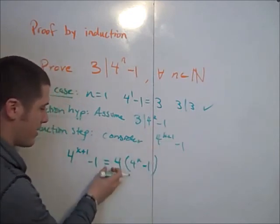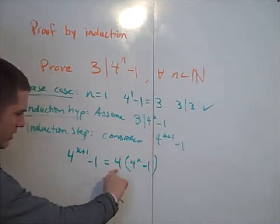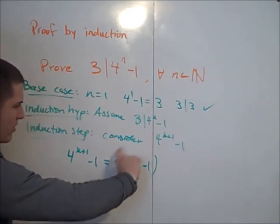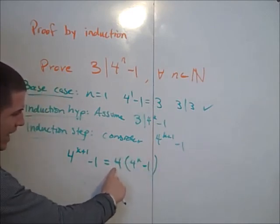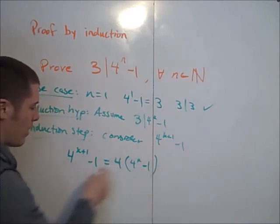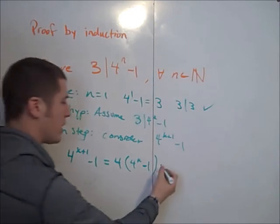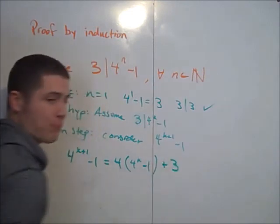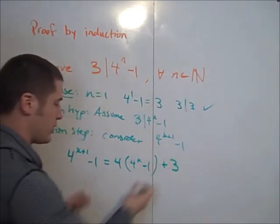Now I want it to look like this. So I'm going to put a minus 1 here knowing that this equation is not true right now. Because if I distribute this 4 back in, I have 4 to the k plus 1 minus 4. But I want it to say minus 1. So we can fix that by just adding 3. Now this equation is true.